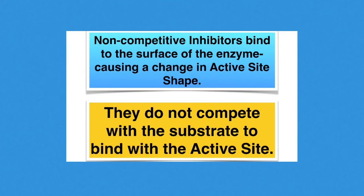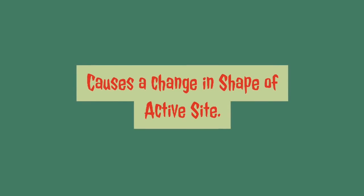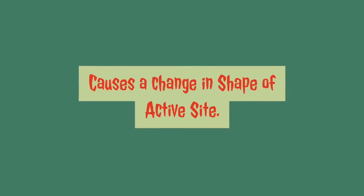Then there are the non-competitive inhibitors. These don't bind directly with the active site. They bind elsewhere on the surface of the enzyme. And by doing so, it causes the active site to change shape so that it can no longer bind with the substrate.